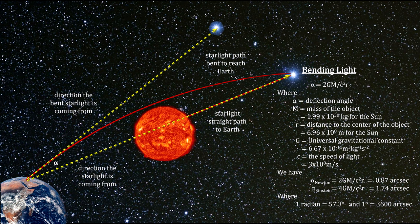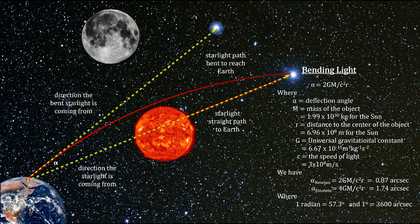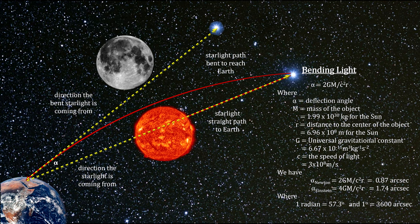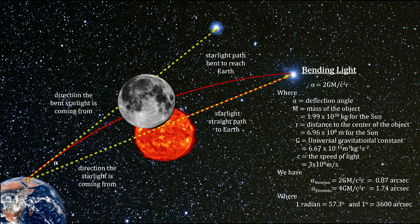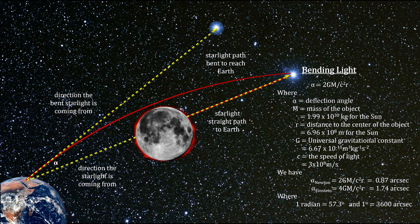Einstein pointed out that the best way to test his theory was to study apparent star locations during a total eclipse of the Sun. In 1919, a solar eclipse was slated to occur with the Sun silhouetted against the Hyades star cluster, the nearest open cluster to our solar system.